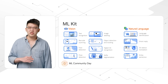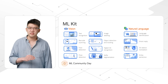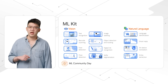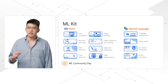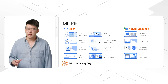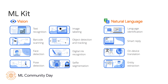ML Kit offers a variety of vision and natural language APIs covering common cases such as barcode scanning and language identification. We are continually adding new APIs and updating our existing ones, so you can be assured that you will always have the latest and greatest features that Google has to offer. Let me go over a few recent updates in ML Kit.